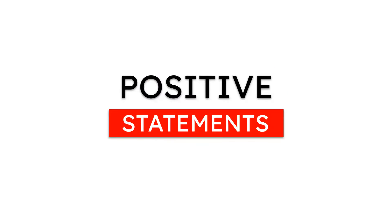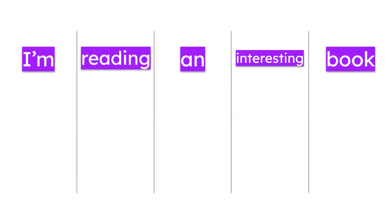Let's start with positive statements. 'I'm reading an interesting book.' Take a minute and think — is this referring to a present action or to the future? If we only have this sentence, we understand that I am doing it right now, I'm reading a book right now. Then we need to use the structure with estar.